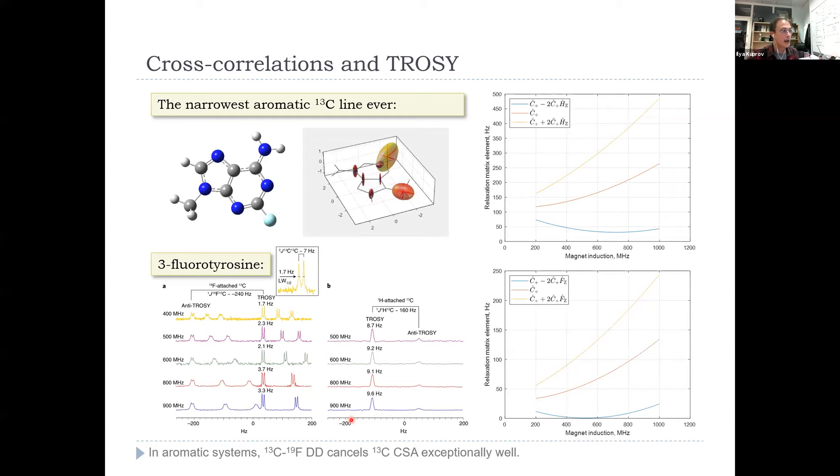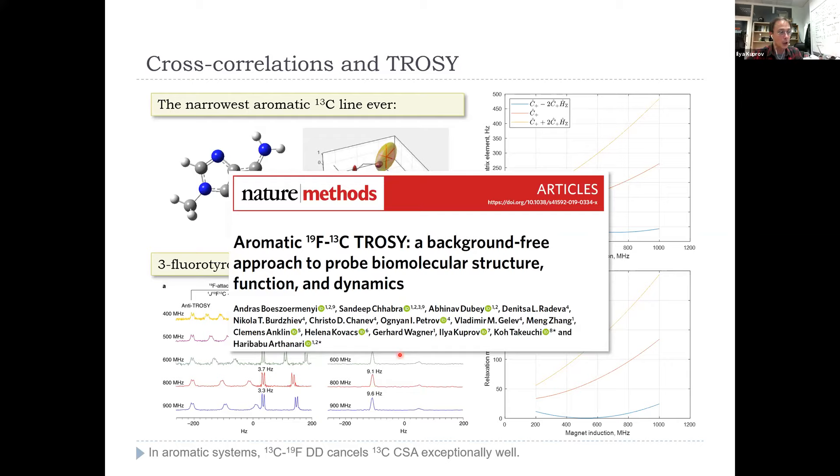Boston Group did the NMR and confirmed that, yeah, for a sizable protein at fields like 900 megahertz, you get the lines which are 1 hertz, 5 hertz, super narrow. That's because in aromatic systems, by just fortuitous natural coincidence, the carbon-13 CSA is cancelled by the carbon-fluorine dipole coupling almost perfectly in both amino acids and the nucleotides. It's a huge group effort. All the spectroscopy was done in Boston. My part was numerical modeling of this. That's another case where Spinach was useful.